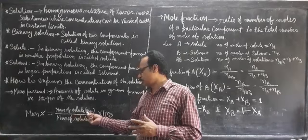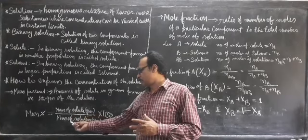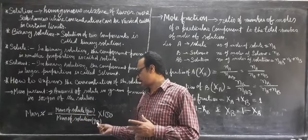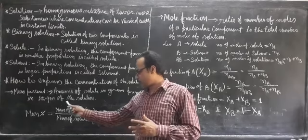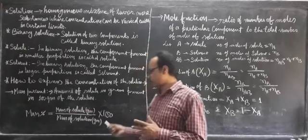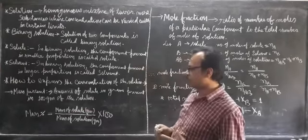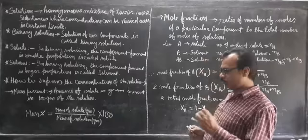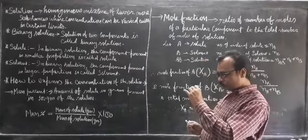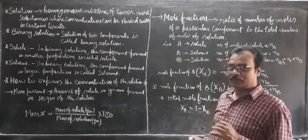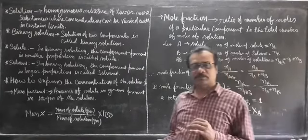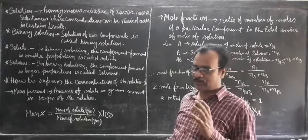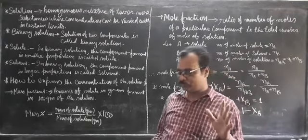Mass percentage equals mass of the solute in grams divided by mass of the solution in grams, multiplied by 100. This is the formula for mass percentage of the solution. This is the most traditional way to express the concentration of a solution.